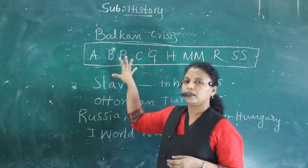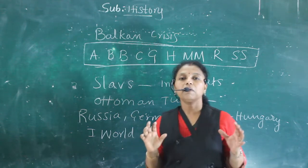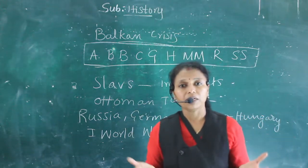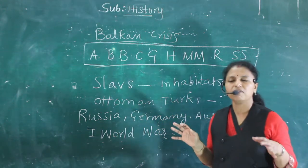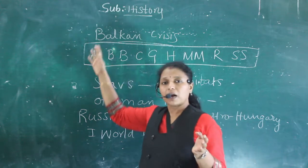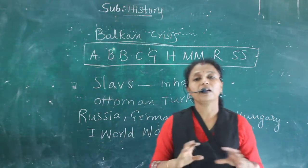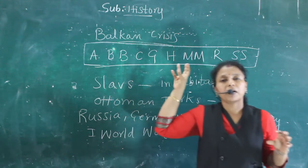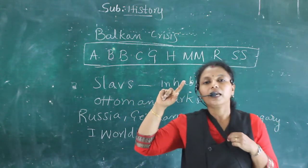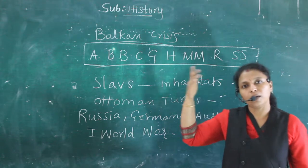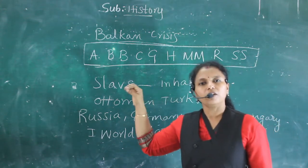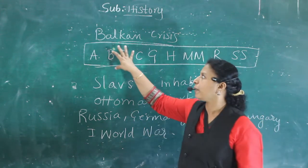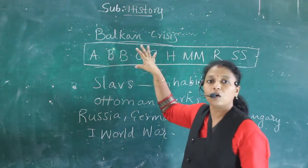All these states came together. The inhabitants had their own traditions, their own language, and their own way of living — they were different from each other. But these Balkan areas were under the Ottoman Empire for a long period of time, and the Ottoman Empire was ruling them.